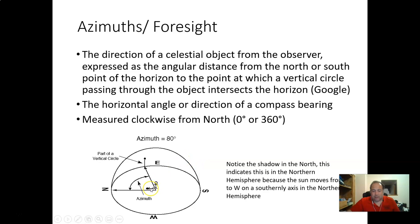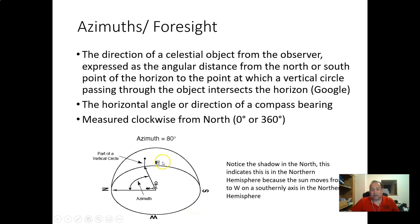One interesting thing in this picture: the shadow is on the north side, which tells you the person is standing in the northern hemisphere. The sun appears in the east, disappears in the west, and travels along a southerly axis in the northern hemisphere — so for the shadow to fall to the north, the sun must be to the south.